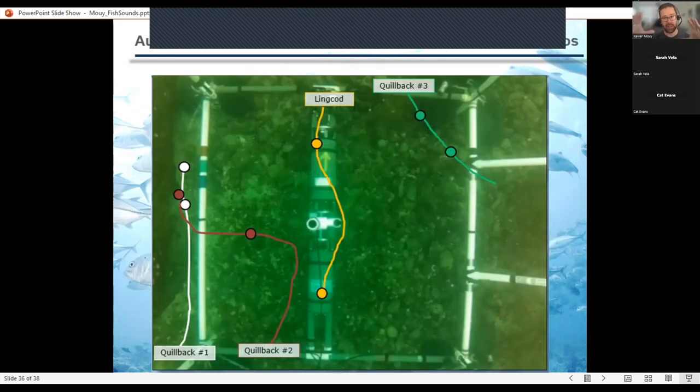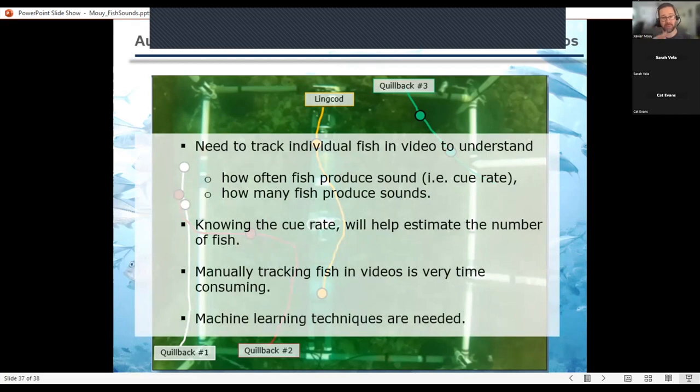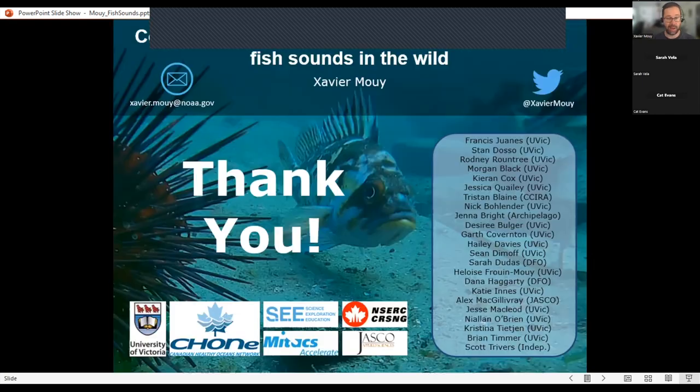And finally, where I can see machine learning being really useful is tracking fish in those video cameras, video data, because we need to know how often those fish produce sound and how many fish are in the area and which one are vocalizing. And so you can track those fish manually, but it takes a lot of time. So if we have an automated process that tracks those fish, and then you can calculate basically for that fish, how often it produces sound, how many fish are in the area. With this, you can get an estimate of the cue rate. And the cue rate is a key component, a key measurement that can help you estimate density and number of fish in an area, just using acoustic recorders. This is work that we have not started yet, but I'm really looking forward to the other talks and see what's existing and what we can use. And that's about it. Thanks to everyone.